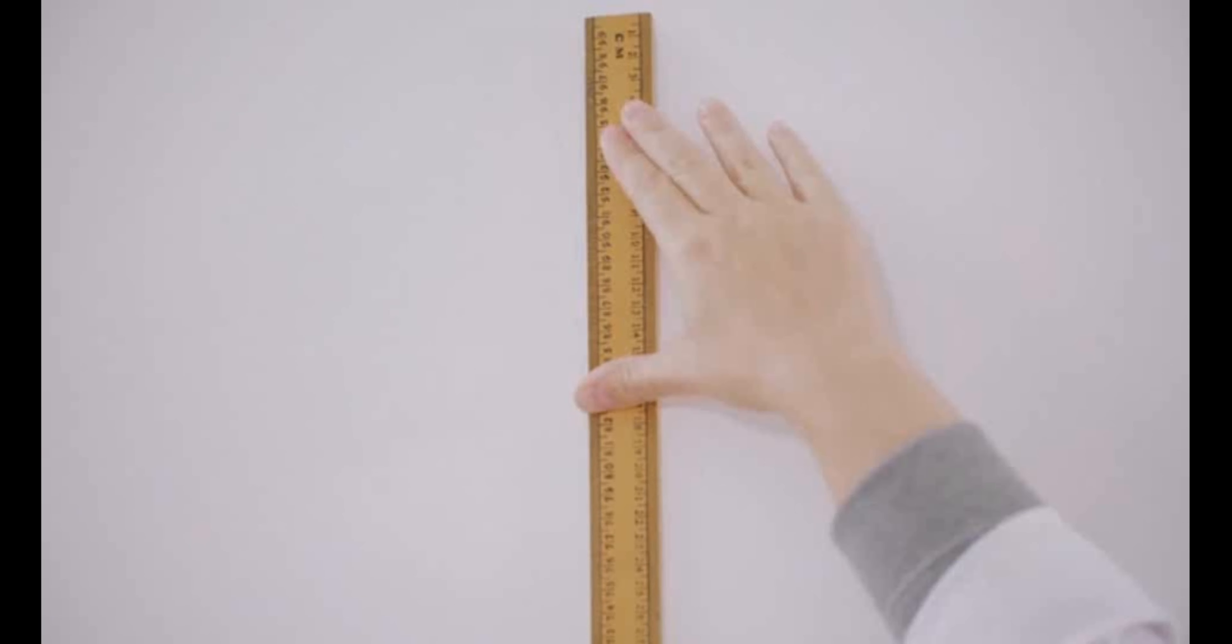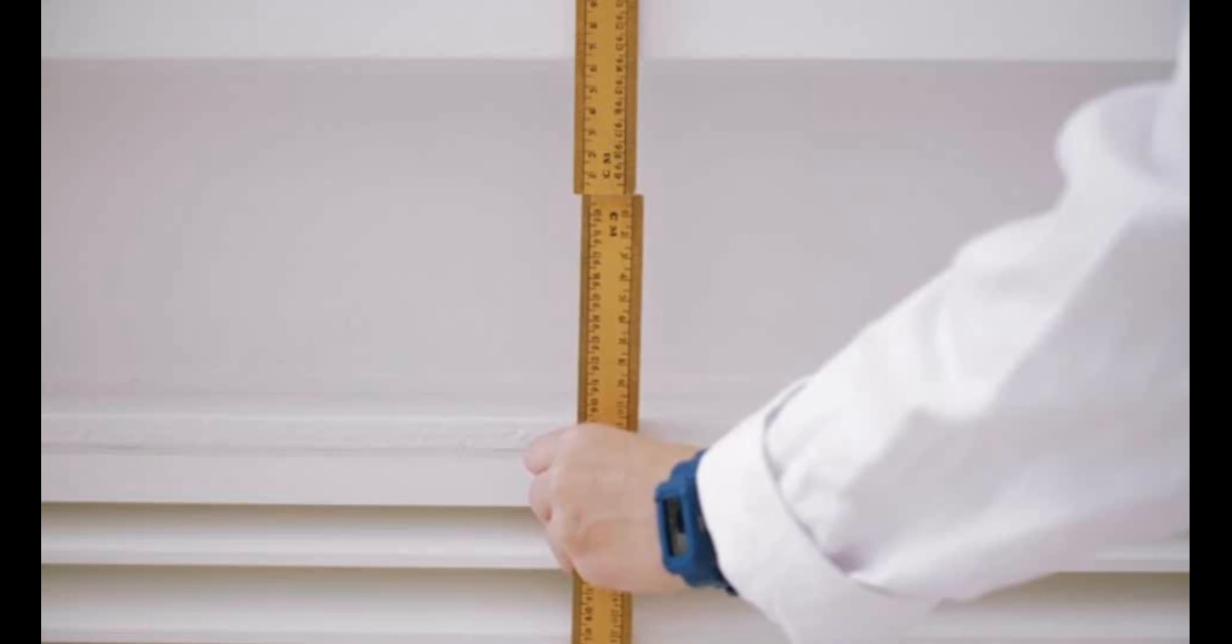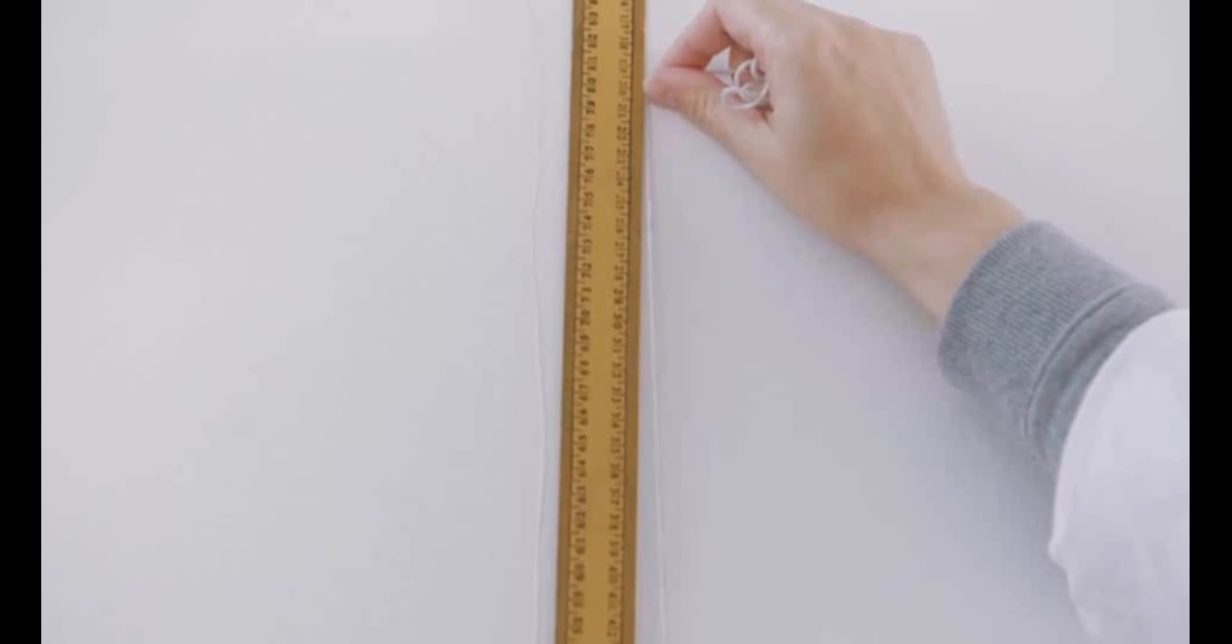A metre rule is fixed to a wall at a height of 2 metres. A plumb line is used to ensure the metre rule is aligned vertically.